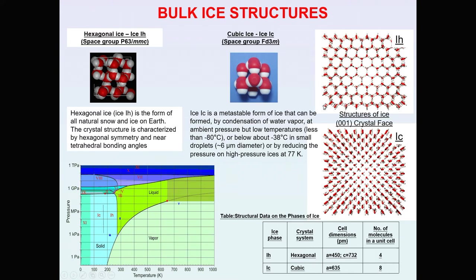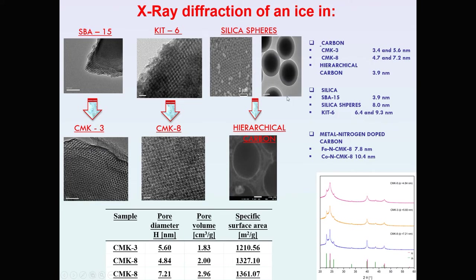We studied the structure of ice confined in different porous matrices. I would like to remind that the phase diagram of bulk water is very rich: depending on pressure and temperature, we can distinguish 16 polymorphic forms of ice, different in structure and properties. At ambient pressure, ice has a hexagonal structure — hexagonal ice, as found in natural snow and ice on earth. At lower temperature and higher pressure, we find cubic ice, which is more densely packed than hexagonal ice.